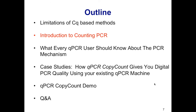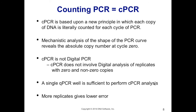I'm going to introduce a new concept we call counting PCR, or CPCR. CPCR is based on a new principle in which each copy of DNA is literally counted for each cycle of PCR. We then perform a mechanistic analysis of the shape of the PCR curve to reveal the absolute copy number at cycle zero. A common misconception is that counting PCR is the same as digital PCR — it is not. We do not use a digital analysis of replicates of zero and non-zero copies. A single QPCR well is sufficient; replicates will give lower error bars.